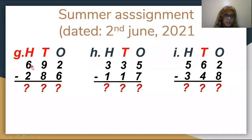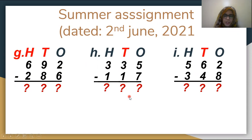Parts G, H, and I: Part G is 692 minus 286. Part H is 335 minus 117. Part I is 562 minus 348. You will solve these and mention the answers in your assignment.